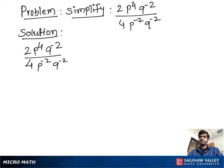So 2 divided by 4 equals 1 over 2. And p to the power 4 divided by p to the power negative 2 equals p to the power 4 minus negative 2. And q to the power negative 2 minus negative 2.